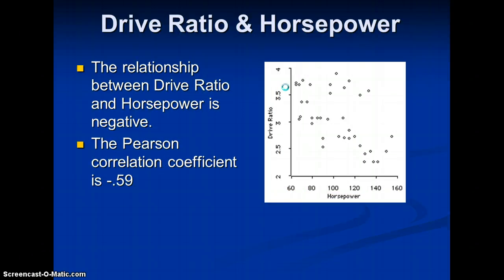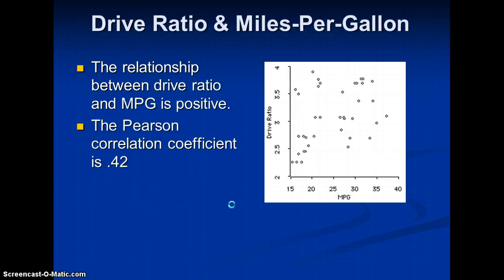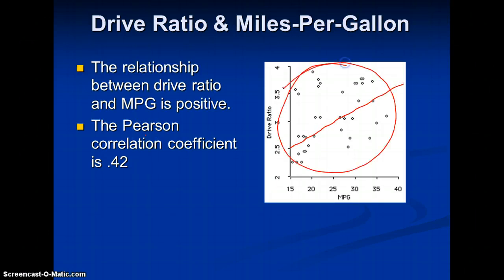Drive ratio and horsepower are negatively related, with a Pearson correlation coefficient of negative 0.59 — still large, but not as large as horsepower and weight. The relationship between drive ratio and miles per gallon is also positive, but the Pearson correlation coefficient is getting weaker. We can still plot a line, but with enough scattering it's becoming difficult to be confident. This is what a medium effect looks like in a scatter plot.